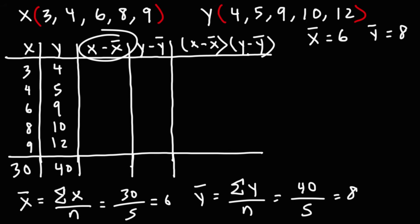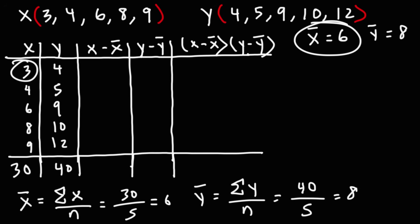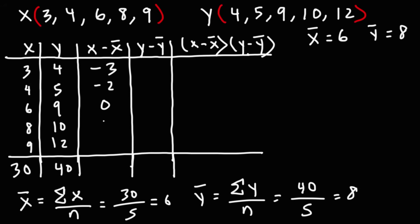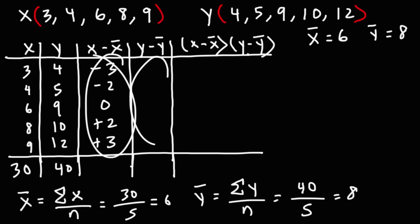For the x minus x-bar column, we subtract the sample mean of 6 from each x value: 3 minus 6 is negative 3, 4 minus 6 is negative 2, 6 minus 6 is 0, 8 minus 6 is positive 2, and 9 minus 6 is 3. The sum of these numbers is 0.